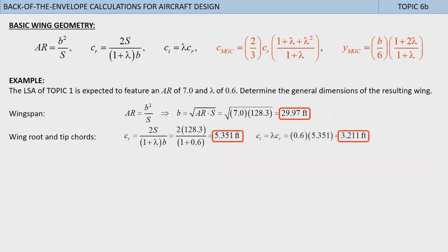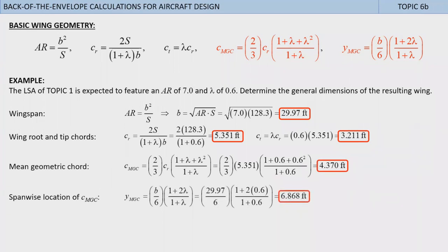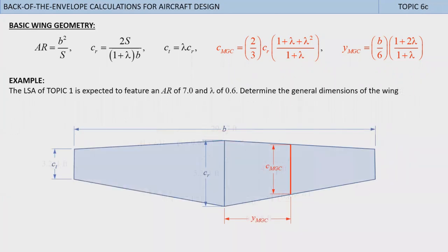Determining the tip chord is super easy using the third equation from the left, giving 3.211 feet. Then calculate the mean geometric chord using the second equation from the right. Substitute the appropriate parameters, which yields 4.37 feet. Finally, estimate the spanwise position of the mean geometric chord using the right-most expression. Substitute parameters and crank. This returns 6.868 feet. Now let's take a gander at the original wing and then display the actual dimensions we just calculated. Then let's finish by looking at topic 7.